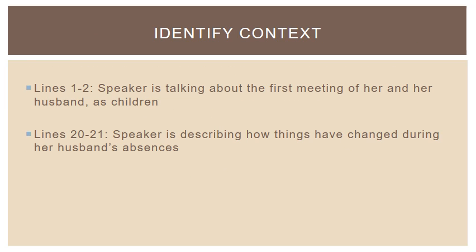The first step is just to identify the context — make sure we understand for ourselves what is actually going on in the moments when these lines are uttered. What's the situation? Without understanding the context, it's very easy to misinterpret or misread a quotation. In lines one to two, this is when the speaker is talking about the first meeting between her and her husband when they were both children. The second quotation, lines 20 to 21, is near the end of the letter, where the speaker is describing how things have changed in her husband's absence — in particular, how the gate has transformed over the period of his absence.